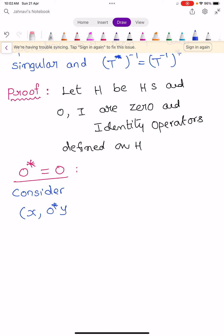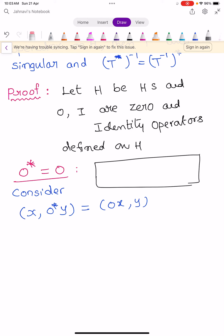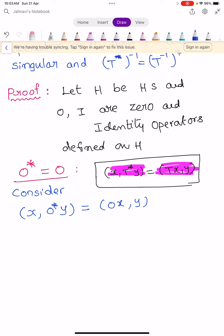Inner product of X and 0 star Y equals inner product of 0X and Y, by the definition of adjoint of an operator, which states that inner product of X, T star Y equals inner product of TX, Y. So, inner product of X, 0 star Y equals inner product of 0X, Y, which is inner product of 0, Y, which equals 0.